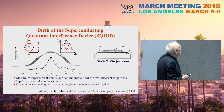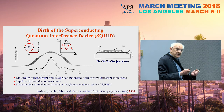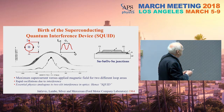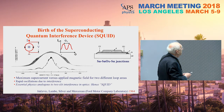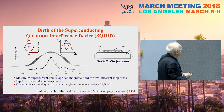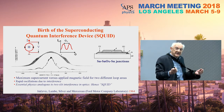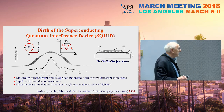The SQUID is the combination of these two ideas. In essence, it consists of a superconducting loop interrupted by two Josephson junctions. We pass a current through them and look at the voltage across them. As we change the magnetic flux, the maximum supercurrent oscillates as a function of flux, with a period equal to the flux quantum.